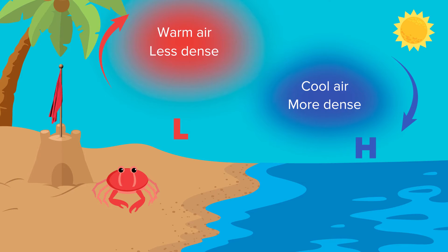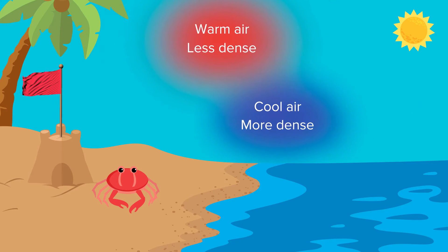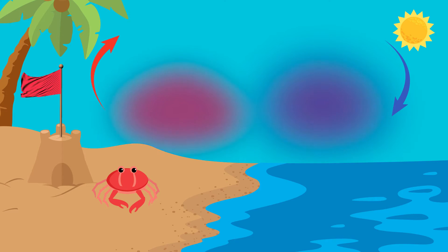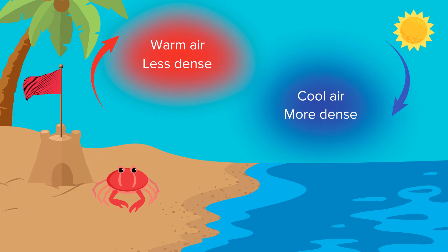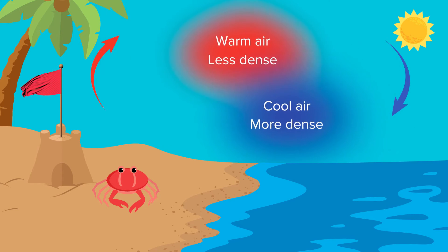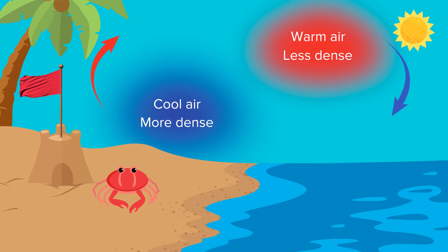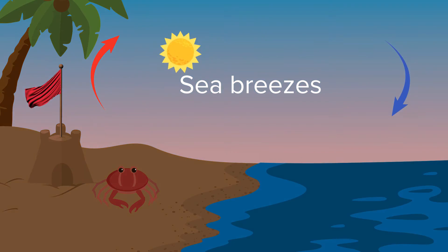The differences in pressure and air temperature create a convection current. Warm air over the land is replaced by cool ocean air. This air is warmed by the land and rises, and the cycle continues. Winds that blow from the sea to the land are called sea breezes.